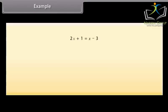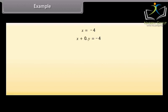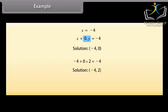Example: let's solve this equation and represent the solutions on the number line and on the Cartesian plane. The equation can be written as 2X minus X equals minus 3 minus 1. Solving gives X equals minus 4. Now, X equals minus 4 can be written as X plus 0Y equals minus 4, making it a linear equation in two variables. The equation reduces to X equals minus 4, giving the first solution (−4, 0). Since X is always minus 4, another solution is (−4, 2).